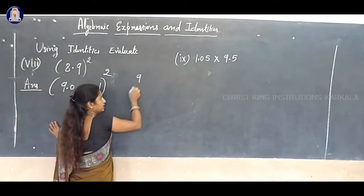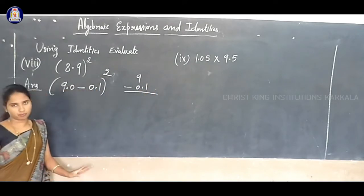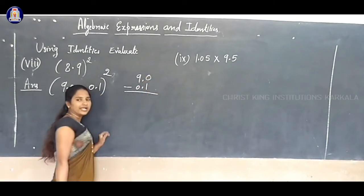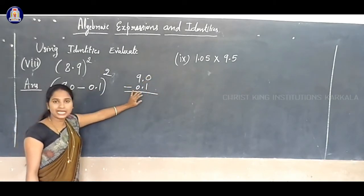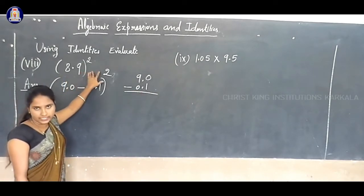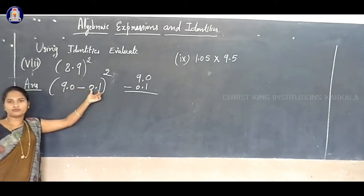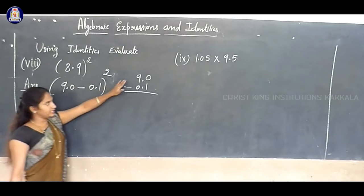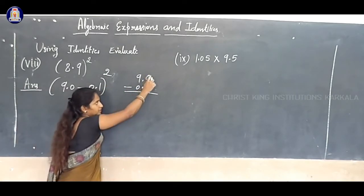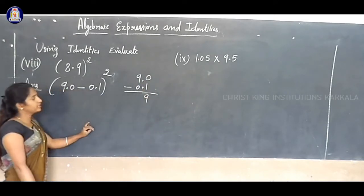From 9, if you subtract 0.1, you get the answer. So here, with decimal point, you can write 9.0. From 9, if you subtract 0.1, so you get 8.9. 10 minus 1 is 9 - correct? So with decimal point, that means 8.9.